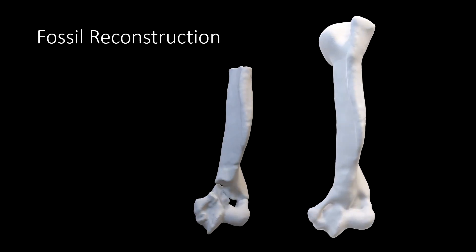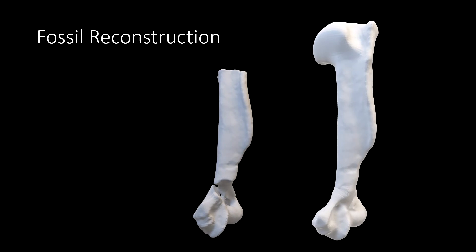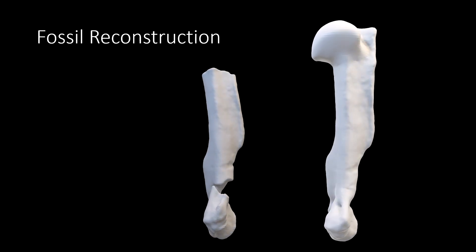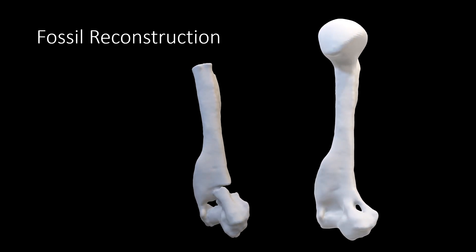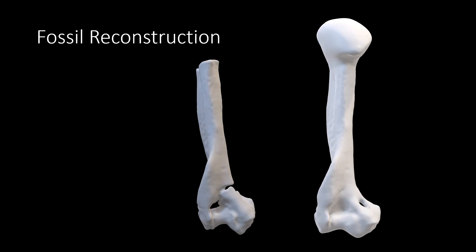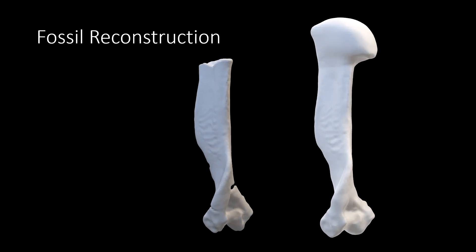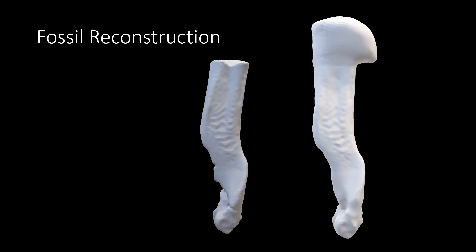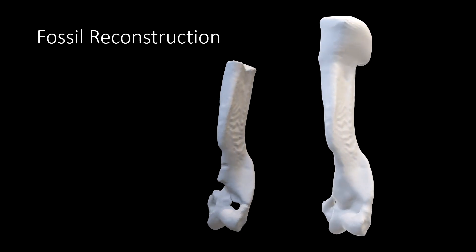Another use would be doing fossil reconstruction. Here on the left you can see the original humerus that was found from a fossil mammal carnivore, and on the right you can see a reconstructed version of the humerus based on related species.